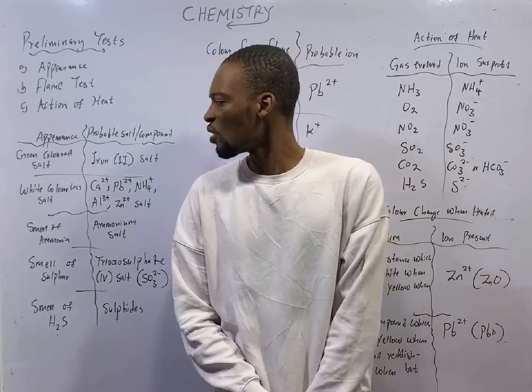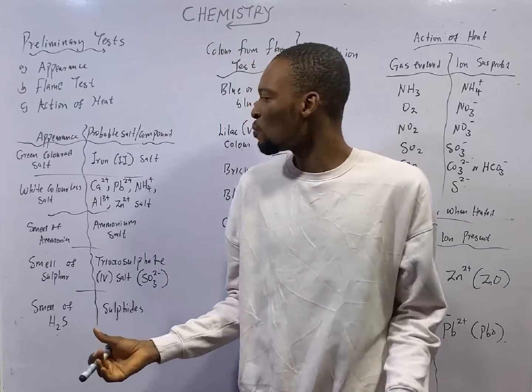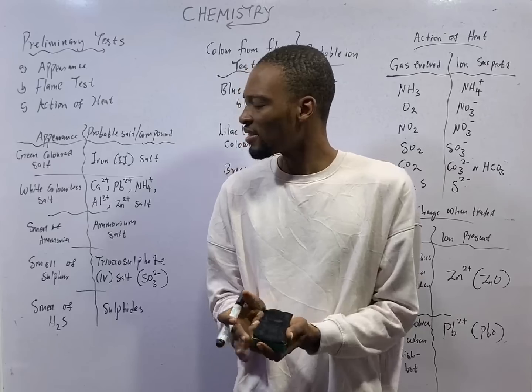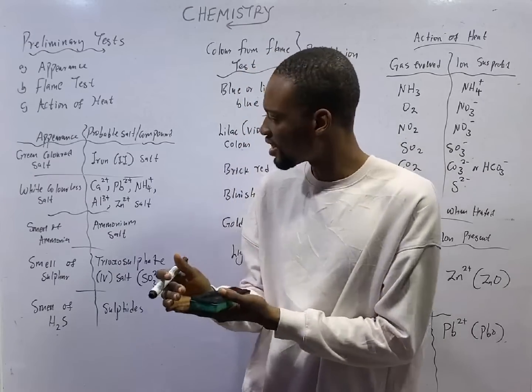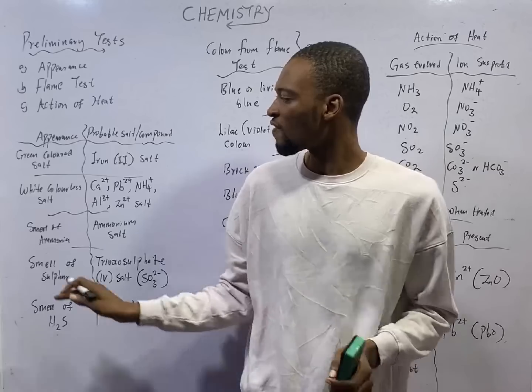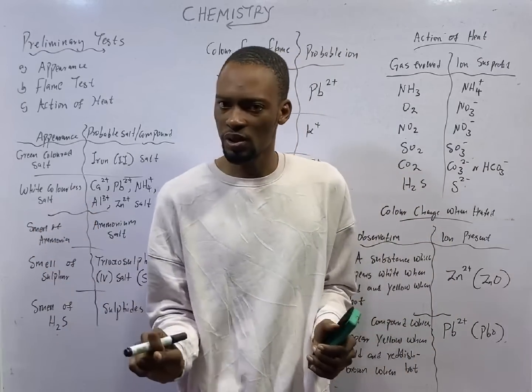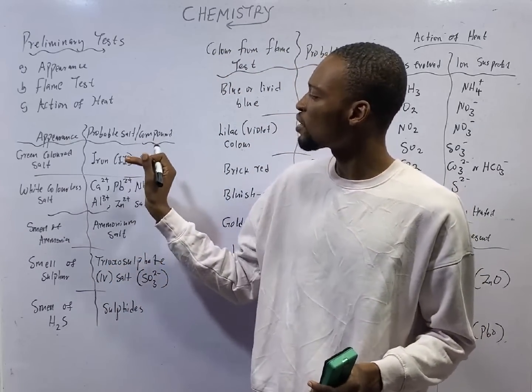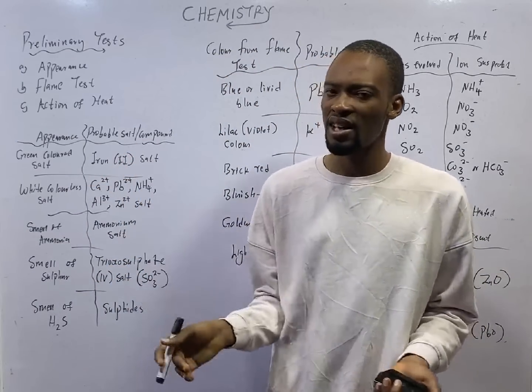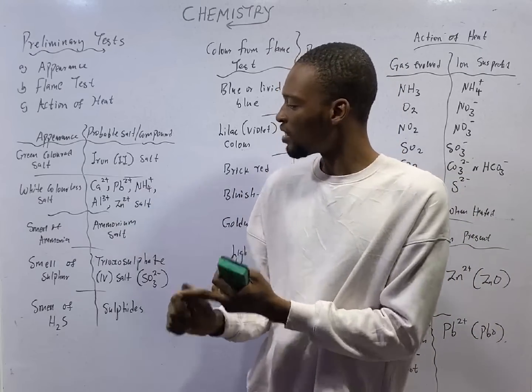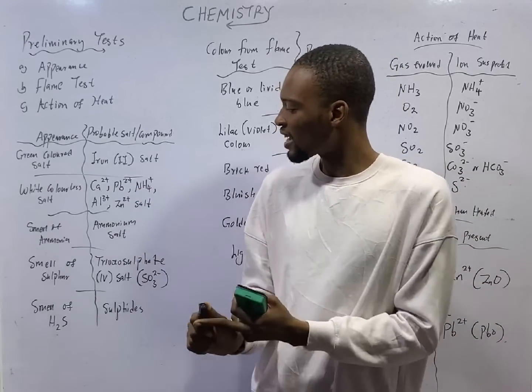Let's start with the appearance test. A green colored salt is likely to be iron two salt. When you are given a salt and you are told that the color of the salt is green, that is iron two salt. The color of iron two salt is green. Then a white colorless salt: there are many ions present or probable salts when they are white colorless. Examples are calcium ions, lead ion, ammonium ion, aluminum ion, zinc ion salt.